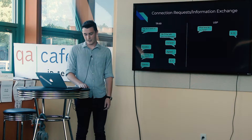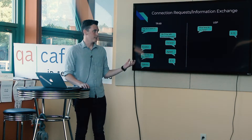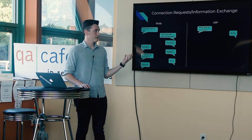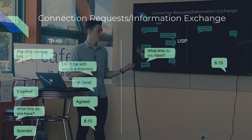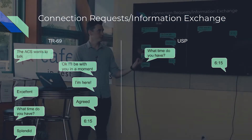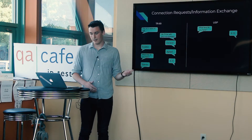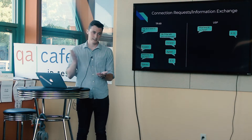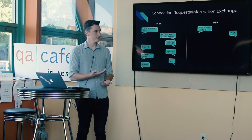This is an example of the difference in the amount of communication required to get simple information from a TR69 client versus a USP agent. On the TR69 side there's clearly a lot of back and forth. On the USP side, not nearly as much — it's just: give me this value, here it is.